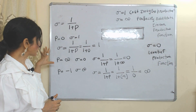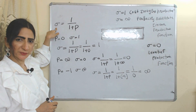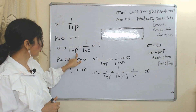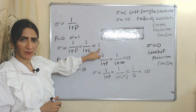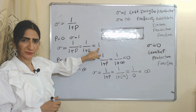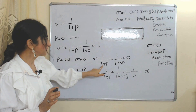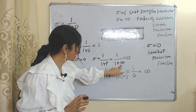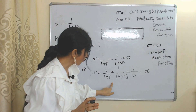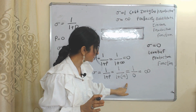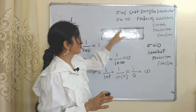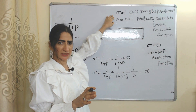Elasticity of substitution depends on the value of rho: if rho equals 0, then elasticity of substitution equals 1; if rho equals infinity, then elasticity of substitution equals 0; if rho equals minus 1, then elasticity of substitution equals infinity.